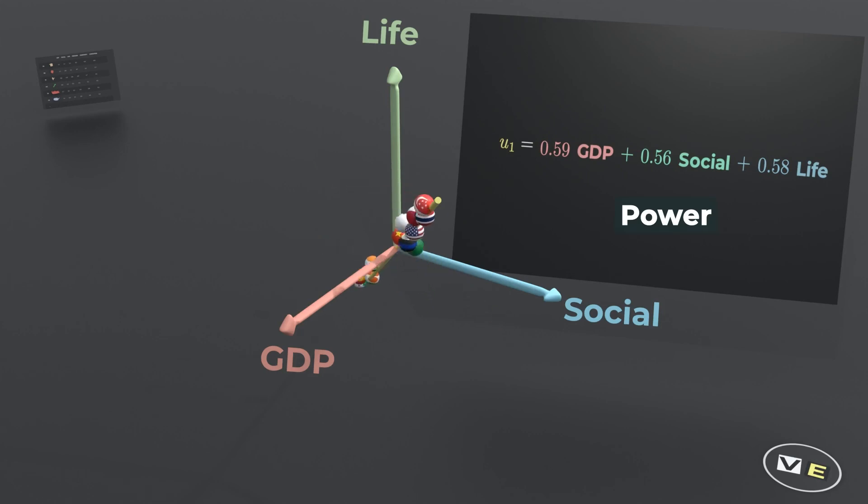When we project the data points on this component, we know that Nordic countries that we normally associate with happiness, like Norway for example, are all positioned high on this axis, while countries like Niger are positioned low.